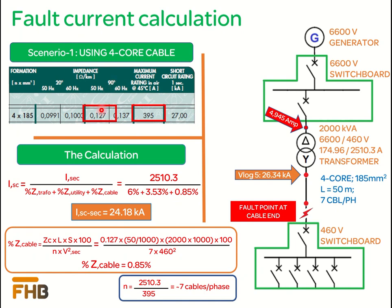L is the length of cable. Here we assume that the length of the cable between the transformer terminal and the other side of the cable connection at the LV switchboard is 50 meters. Since the cable impedance is in ohm per kilometer, therefore we need to convert the cable length into kilometer as well.